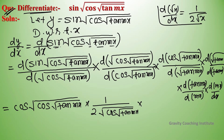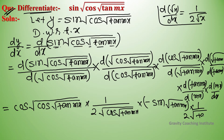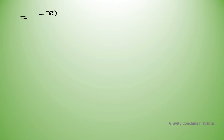And then multiplying through: 1 upon 2 into tan(mx), then cos minus sin(√(tan(mx))), root gives 1 upon 2 into tan(mx), and finally minus m·sec²(mx) into the expression.